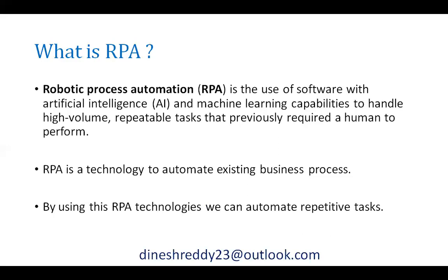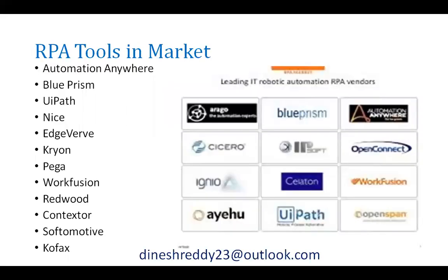Then only we can implement RPA. Why we are calling it Robotic Process Automation — these RPA tools will mimic human tasks. Whatever instructions we give to robots, they follow the same instructions. In the same way, we give instructions to our RPA tool to perform some task in some application.